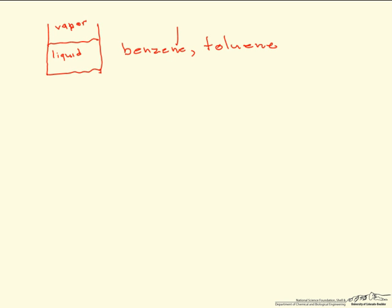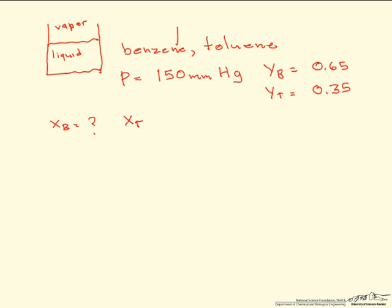We are given that the pressure of the system is 150 mmHg, and the mole fractions in the vapor for benzene is 0.65 and for toluene is 0.35. And what we want to know are what are the mole fractions of benzene and toluene in the liquid.